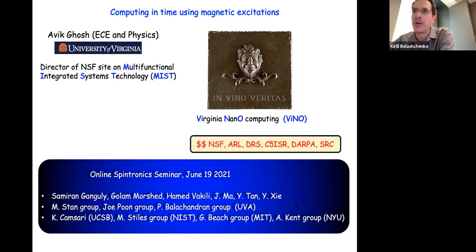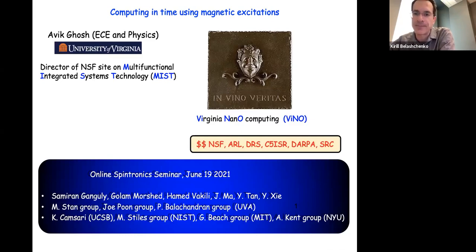Professor Ghosh has authored well over 100 journal papers and a book called Nanoelectronics: a Molecular Review in the area of computational nanomaterials and devices. He has given well over 100 invited lectures worldwide. He is a fellow of the Institute of Physics, a senior member of the IEEE, and has received the IBM Faculty Award, the NSF Career Award, and a 2006 Best Paper Award from the Army Research Office. He has also received the University of Virginia's All-University Teaching Award, and his group's work with Columbia University on negative index behavior in graphene was voted by the editors of Physics World as one of the top 10 research breakthroughs in 2016. With this, I'll hand it over to you. Please go ahead with your talk.